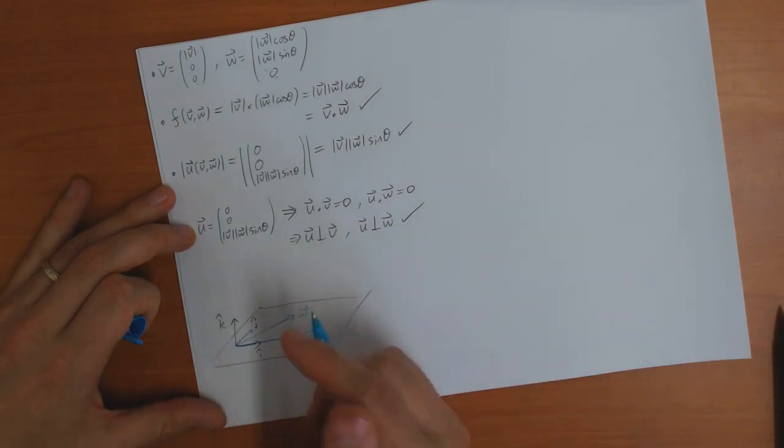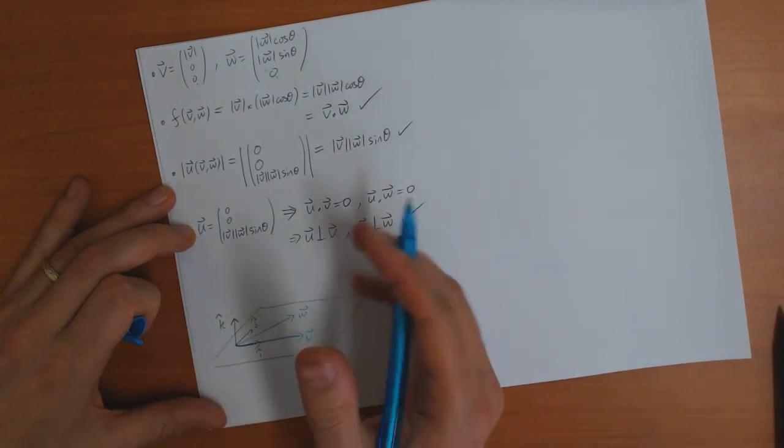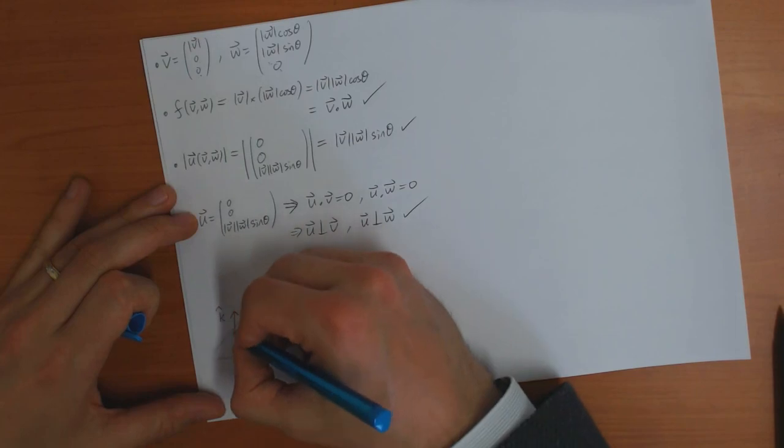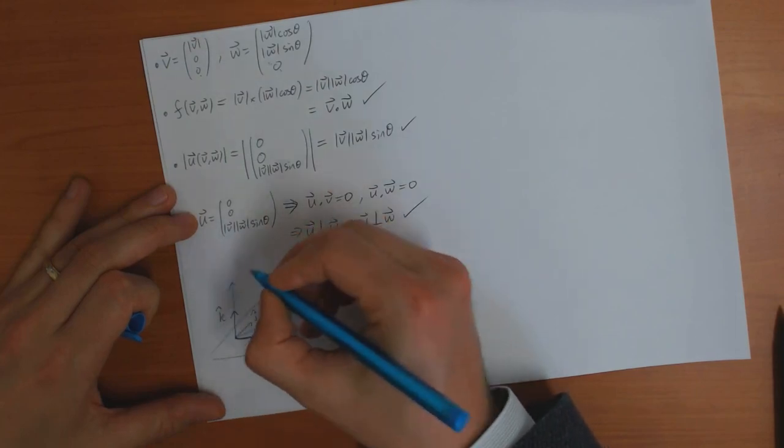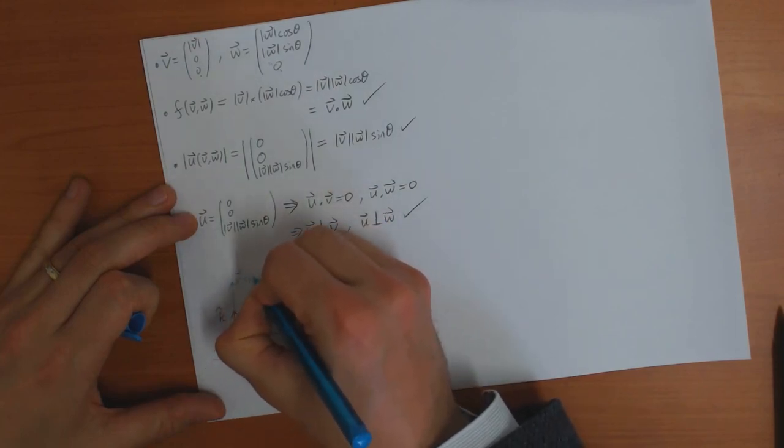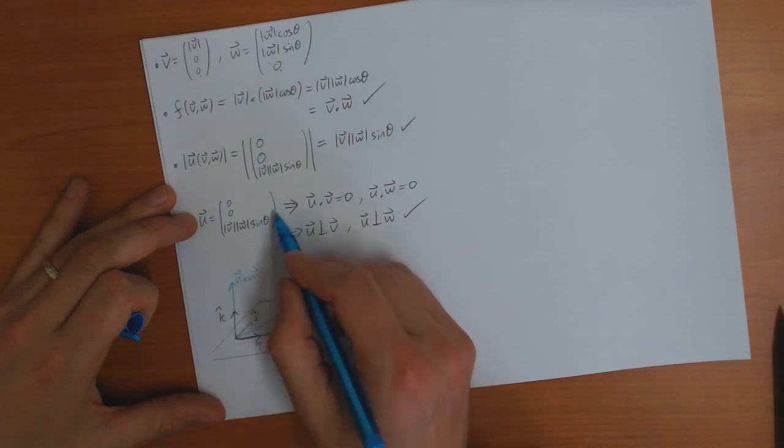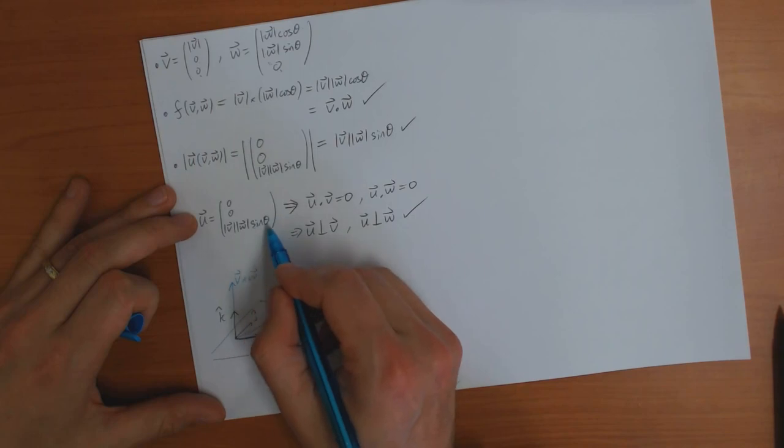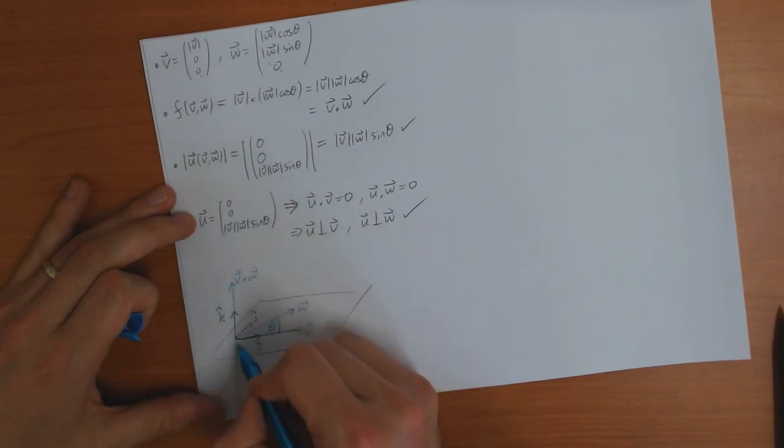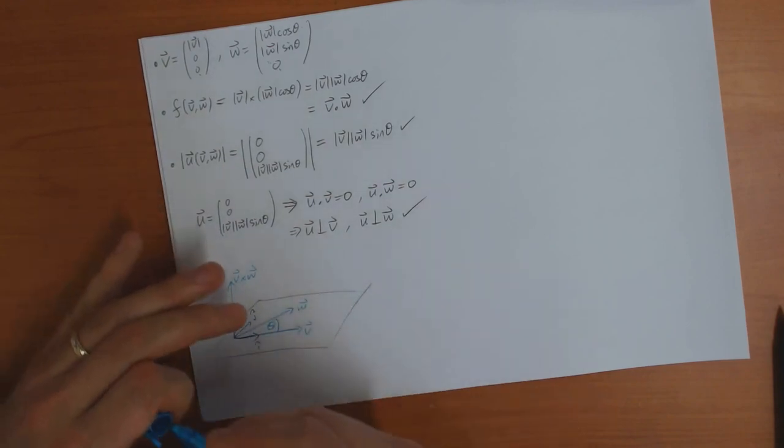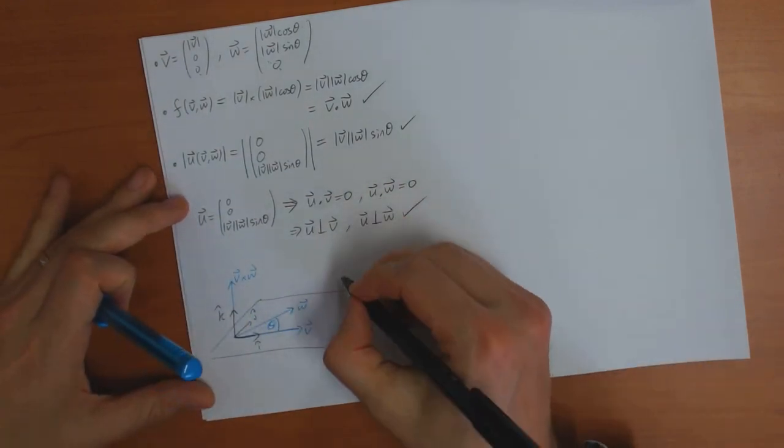And you can see that the vector product then using the right hand rule should be pointing in this way, which means it should have positive k component. And indeed here sine theta, theta is less than 180 degrees so sine theta is positive, so this is positive, so therefore it is pointing in the right direction. So the right hand rule is also okay.